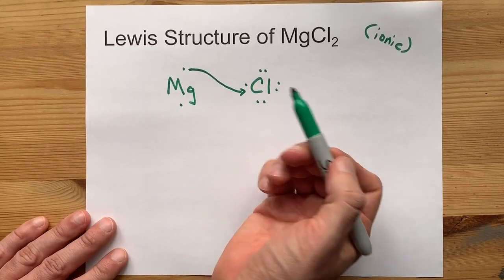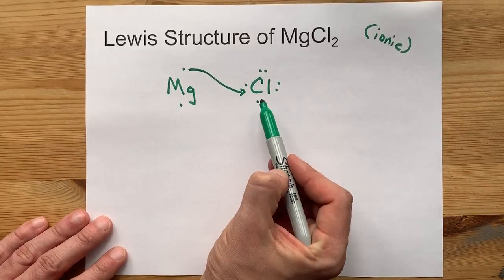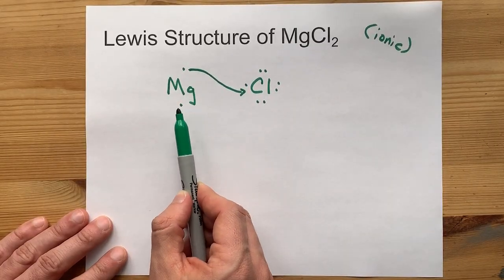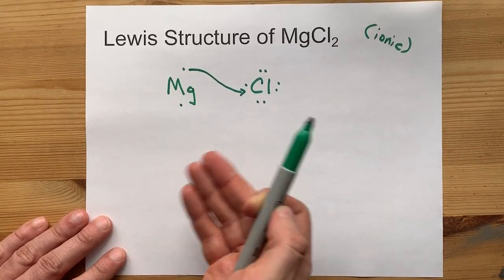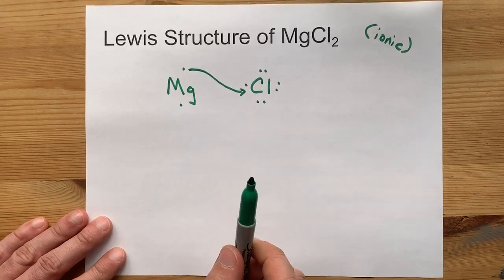Now this chlorine is happy and stable with 8 electrons around it. But this magnesium still has one extra electron to give away. Where is it going to go?